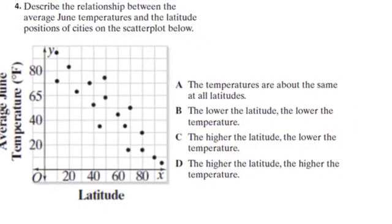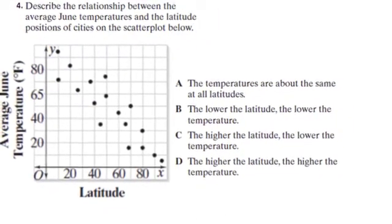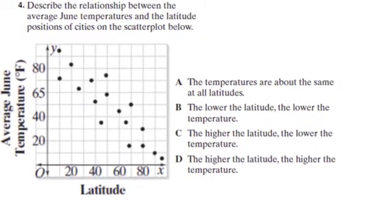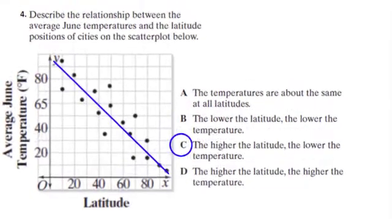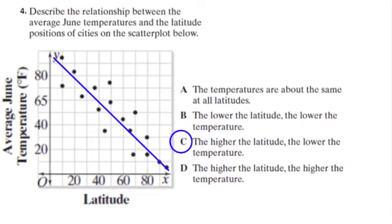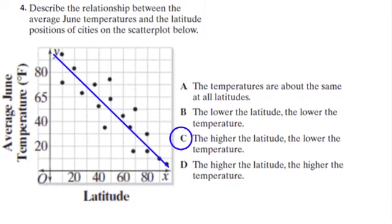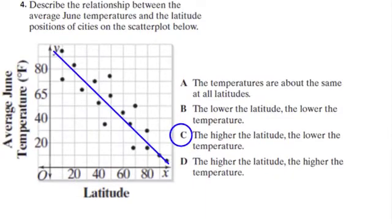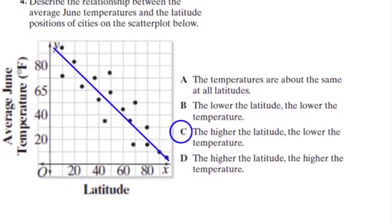In example four, we're comparing the latitude to the average temperature in June. Well, as the latitude increases, the temperature is decreasing. And so answer choice C would positively describe that graph.